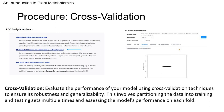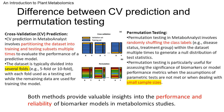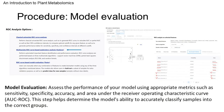Here's the difference between cross-validation prediction and permutation testing. CV prediction in MetaboAnalyst involves partitioning the dataset into training and testing subsets multiple times to evaluate the performance of a predictive model. Permutation testing in MetaboAnalyst involves randomly shuffling the class labels — for example, disease status or treatment group — within the dataset multiple times to generate a null distribution of test statistics. Both methods provide valuable insights into the performance and reliability of biomarker models in metabolomic studies.